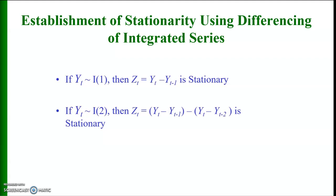Regarding the establishment of stationarity using differencing of integrated series: if a series yt is integrated of order 1, then zt equals yt minus yt-1 is stationary. If yt is integrated of order 2, then the second difference — yt minus 2 times yt-1 plus yt-2 — is stationary. So a series integrated of order 1 is stationary at the first difference, and a series integrated of order 2 is stationary at the second difference.